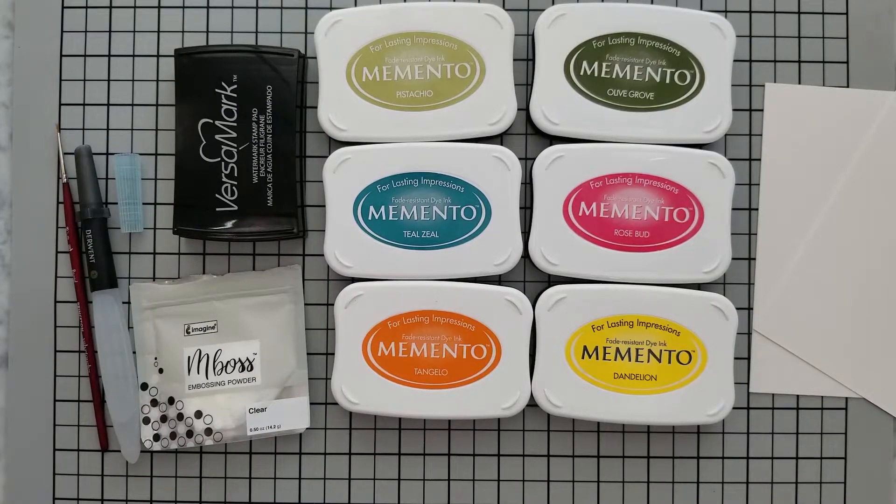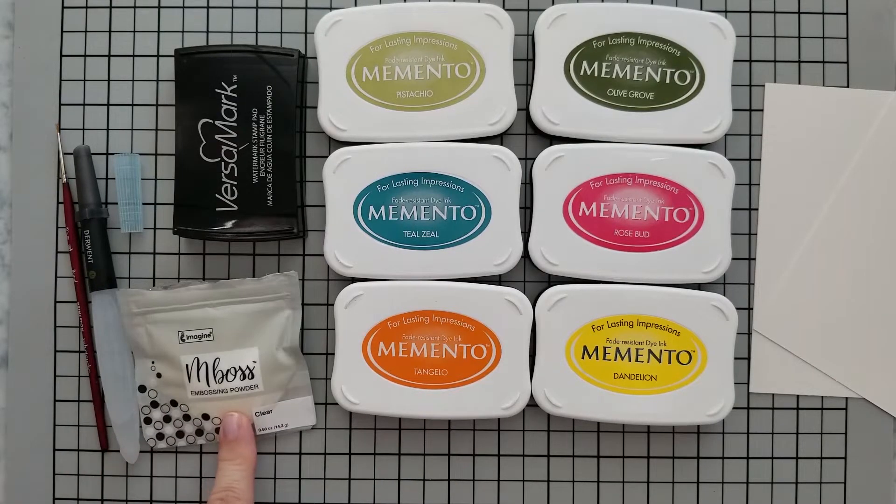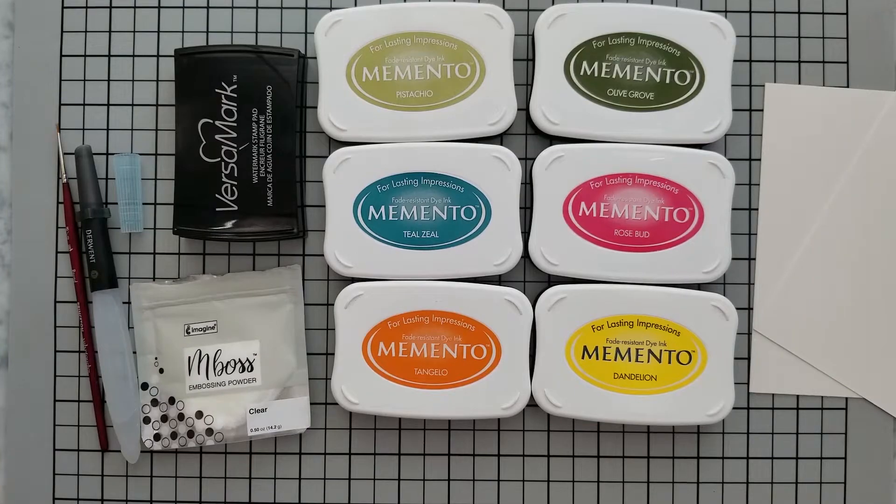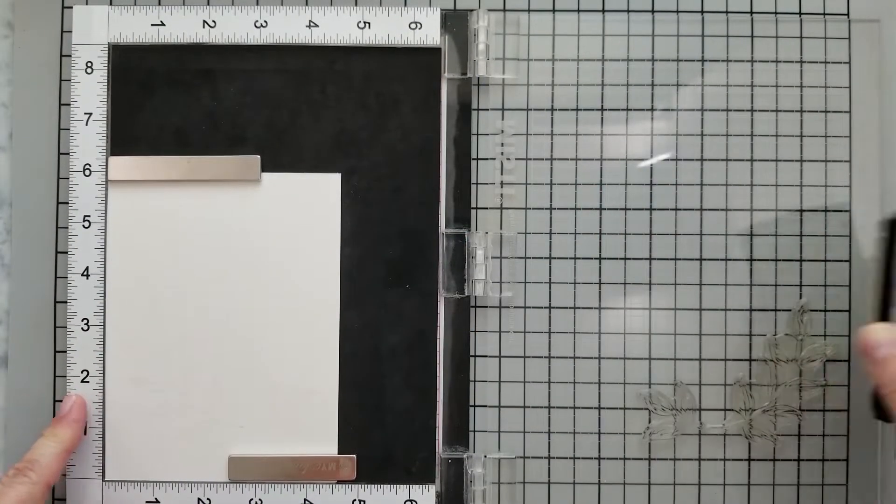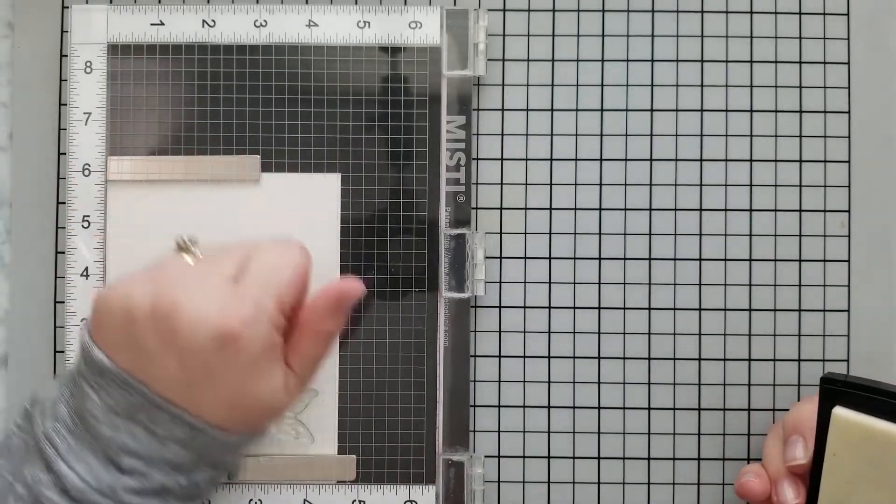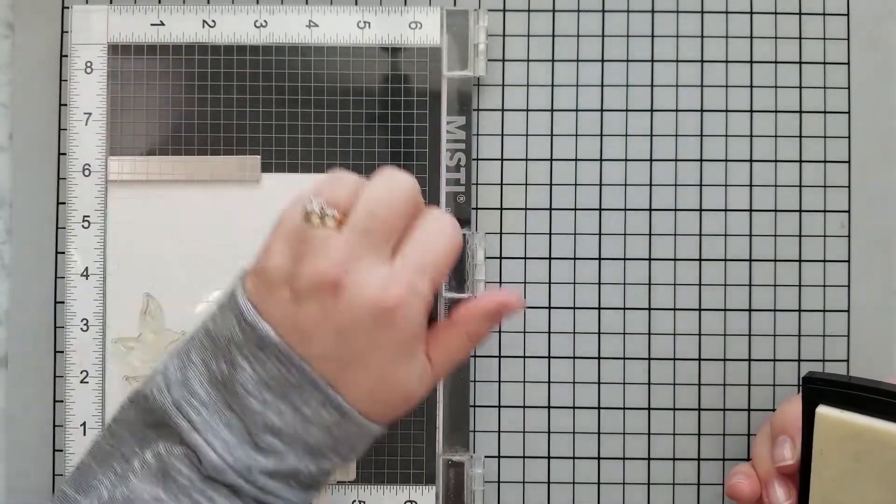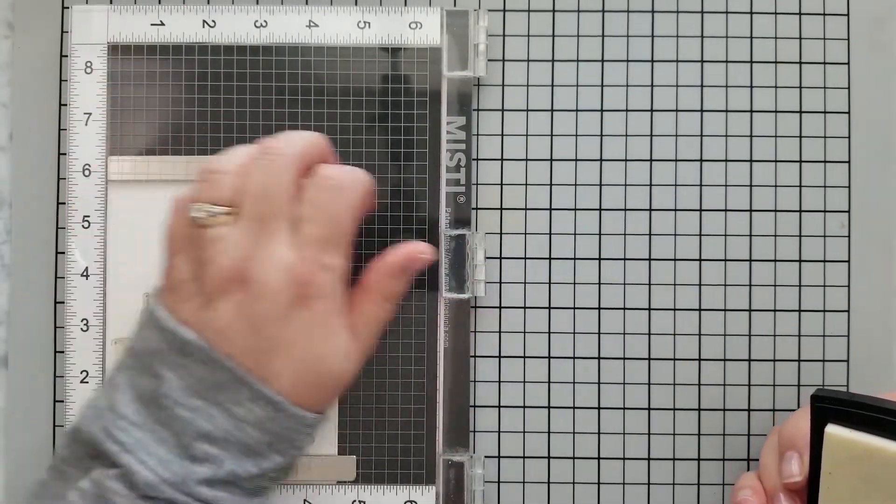Here are the products we're going to be using: several Memento inks in Pistachio, Olive Grove, Tangelo, Dandelion, Teal Zeal, Summer Sky, and Rosebud. We're also going to use Versamark ink, clear embossing powder, watercolor paper or Bristol smooth, watercolor brushes or aqua brush, a craft mat to make cleanup easy and protect my work surface, anti-static tool, heat gun, and a stamp positioning tool for repeat stamping.